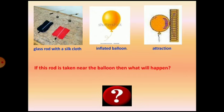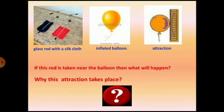Now the question is: why is this attraction taking place? Attraction takes place between charged particles — positive charge and negative charge. The attraction does not take place between two positive charges or two negative charges. Instead, attraction takes place between one positive and one negative charge — that is, between oppositely charged particles. So like charges repel each other and unlike charges attract each other. Positive and positive charges repulse; negative and negative charges repulse; but positive and negative charge particles attract each other.